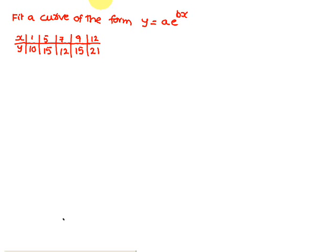Today we are going to discuss fitting a curve of the form y = a·e^(bx). Till now what we have studied is fitting of a straight line and fitting of a parabola. Now the curve should be in the form of y = a·e^(bx). If you observe this, you come across the letter e. If you come across this type of problem, how do you handle it? We have y = a·e^(bx).